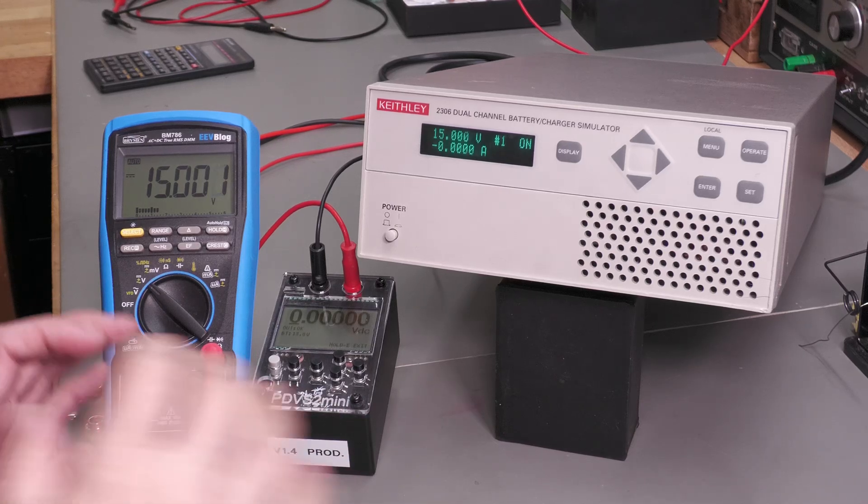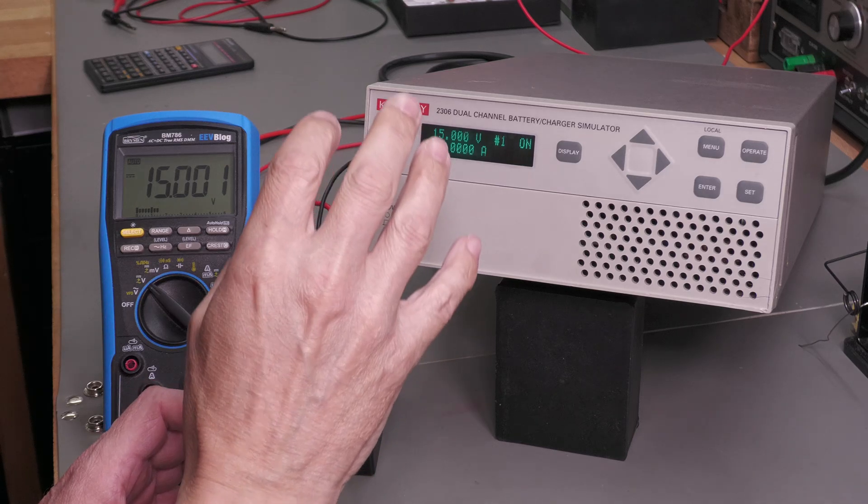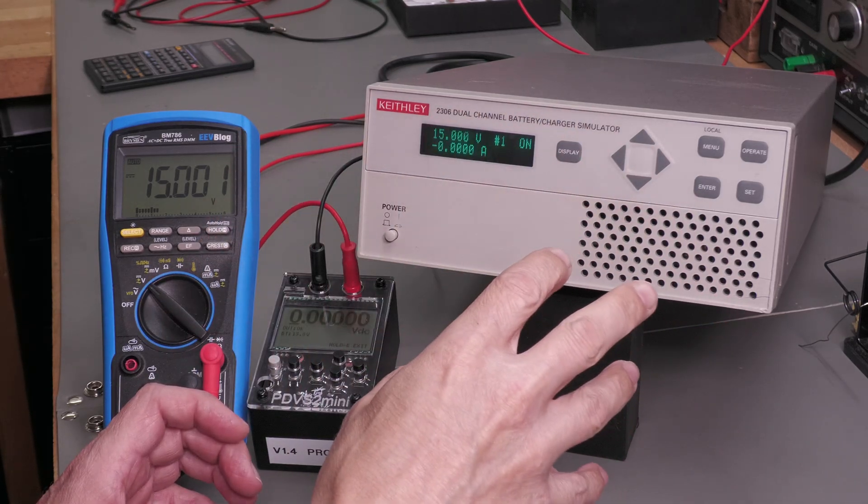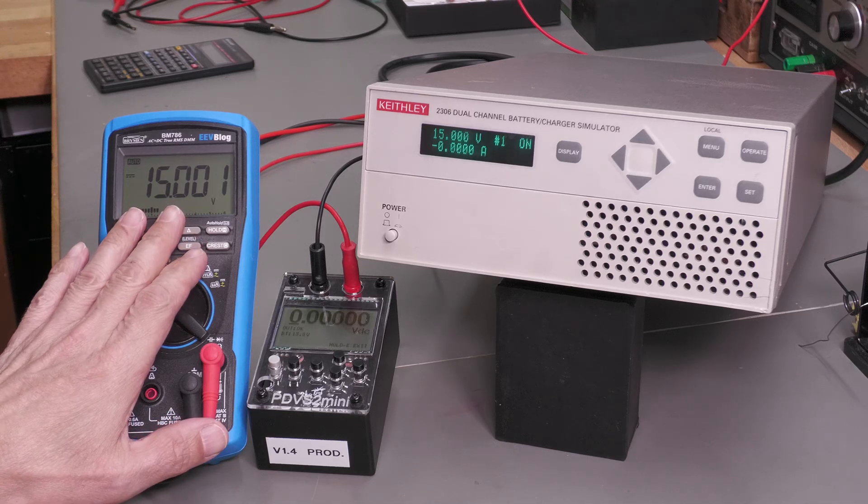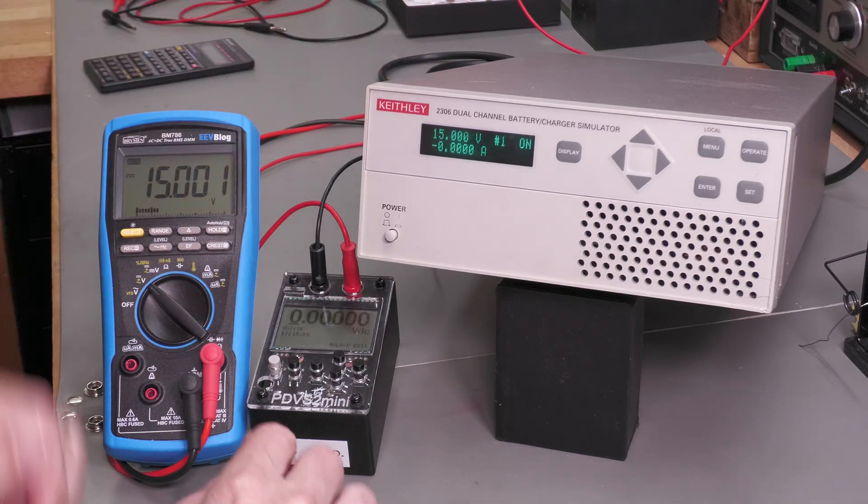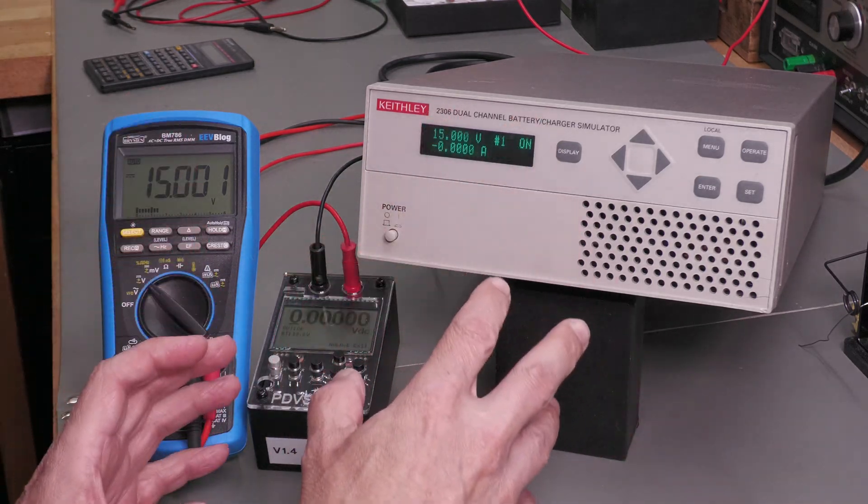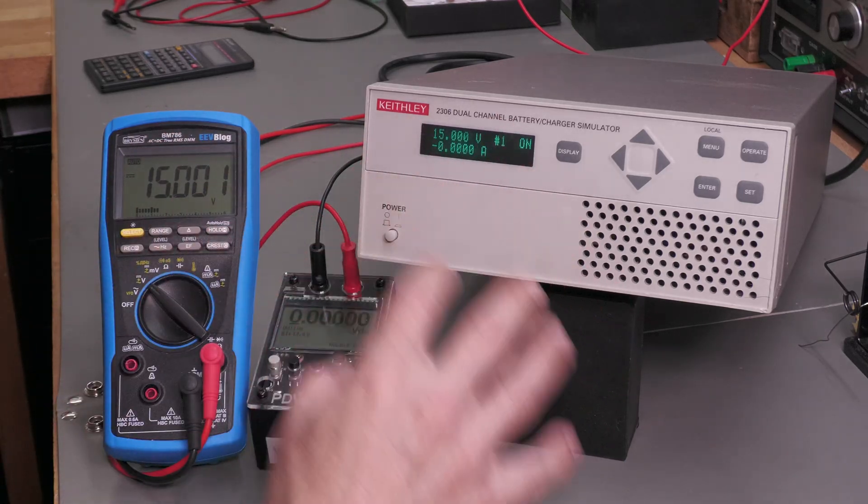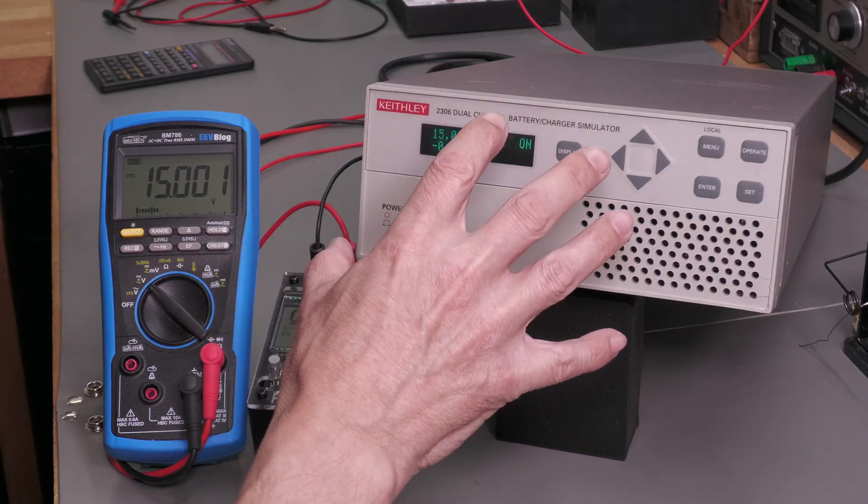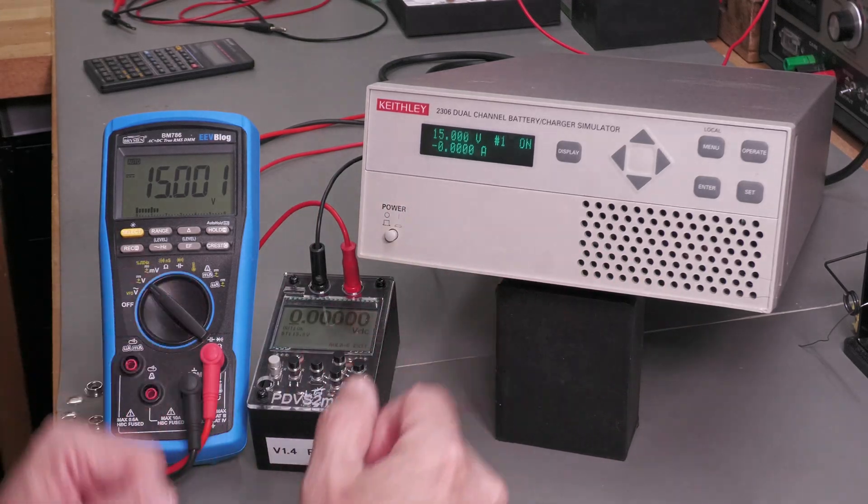Okay, so I've got the unit hooked up. The basics of each channel is that it is a power supply, but it is also a DVM, i.e. a voltmeter. So on the terminals on the back, I've hooked up my electronic load off camera and my multimeter here on that power supply output. And I've also got my PDVS2 mini hooked up to that DVM input. So the purpose behind the power supply is to do charging, and the purpose behind the DVM is to monitor battery voltage. That way the unit's got full control and full visibility of everything that's going on when you're charging or simulating batteries.